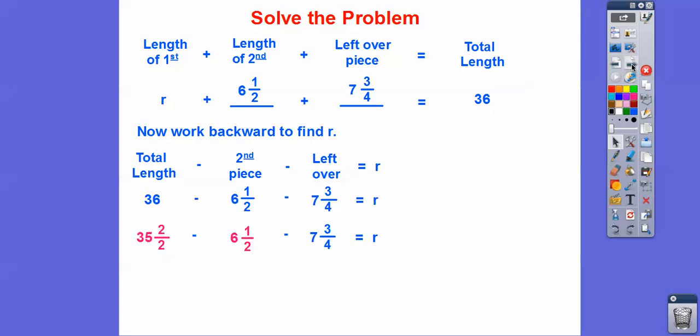So our working backwards is going to be the total length is 36, and we'll take off the second piece, and then we'll take off the leftover piece. And then we'll go ahead and get common denominators. Let's just subtract these two guys right here. 36 is the same as 35 plus 1, but our 1 is going to be 2 over 2, so we can subtract off 1 over 2 right here. So now it's 35 and 2 over 2 minus 6 and 1 over 2, so 35 minus 6 is going to be 29. And then 2 over 2 minus 1 over 2 is going to be 1 over 2, so those first two give us 29 and a half. Now we'll get a common denominator, which in these guys is 4 right here, so we'll change this to 2 over 4, because 1 half is the same as 2 over 4.